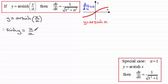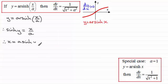First of all, what I'm going to do is make x the subject from here by multiplying both sides by a. So therefore we get x equals a sinh of y. And so, if I differentiate both sides with respect to y, we end up with dx/dy equaling a cosh y.